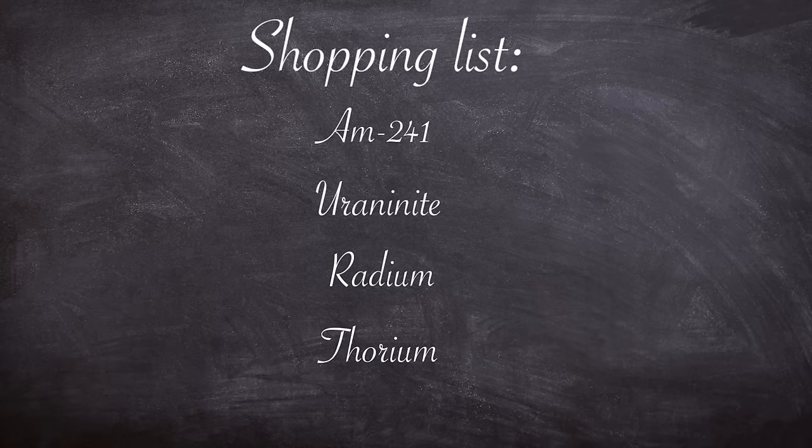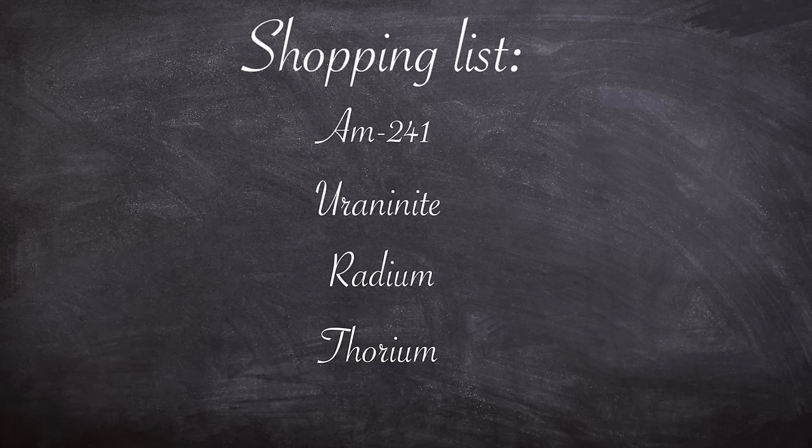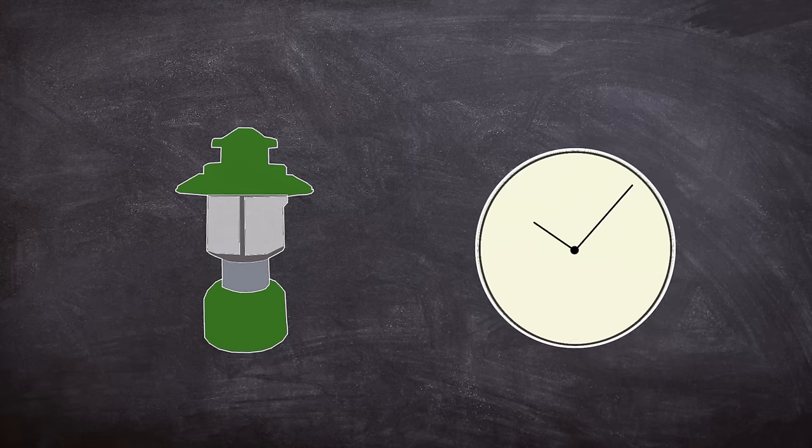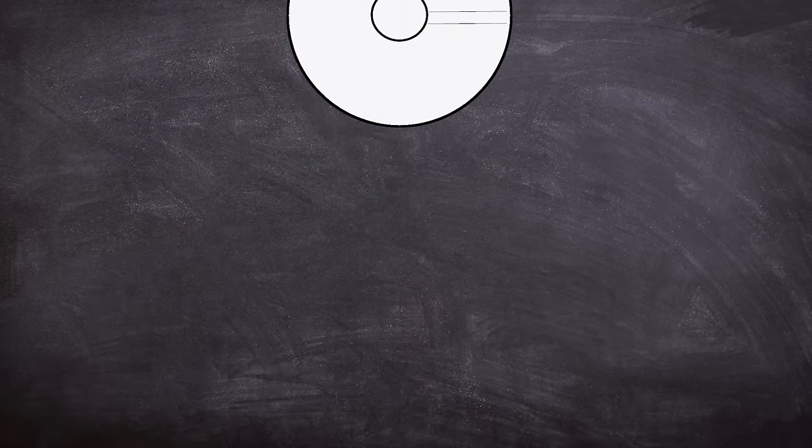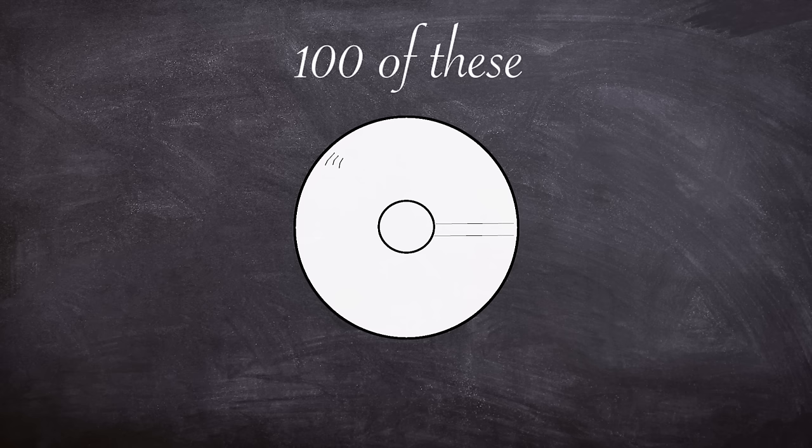Thorium can be found in certain types of gas lanterns, which again is readily available to find, especially for a boy scout. However, with all the isotopes listed, each item only contains a minute amount. For the easy to find items such as the lanterns and clocks, David accumulated these from anywhere he could, buying from antique stores and camping supply shops, claiming it was for a report. David managed to get hold of a large amount, around 100 broken smoke detectors, at a fraction of the as-new cost.